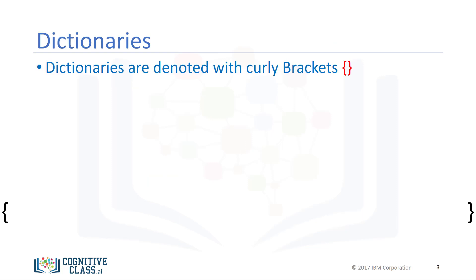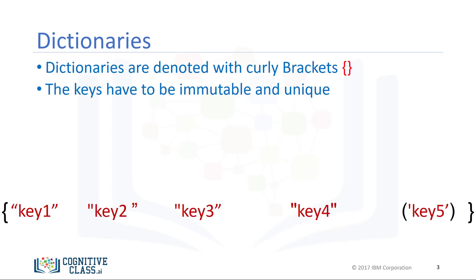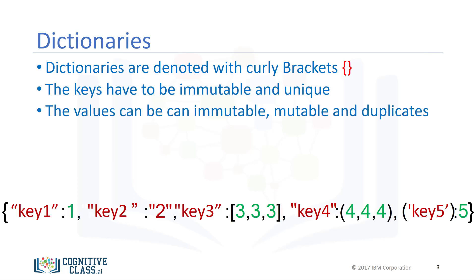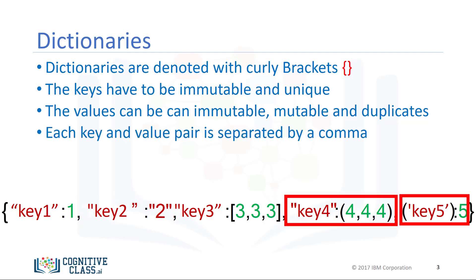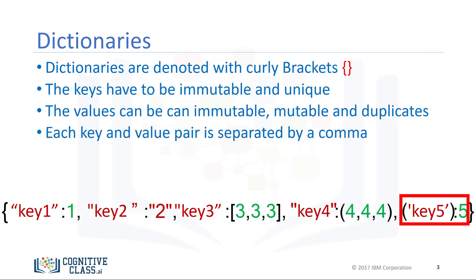To create a dictionary, we use curly brackets. The keys are the first elements — they must be immutable and unique. Each key is followed by a value separated by a colon. The values can be immutable, mutable, and duplicates. Each key and value pair is separated by a comma.